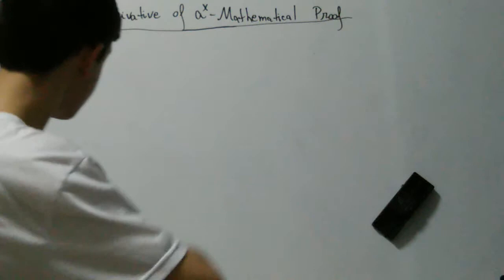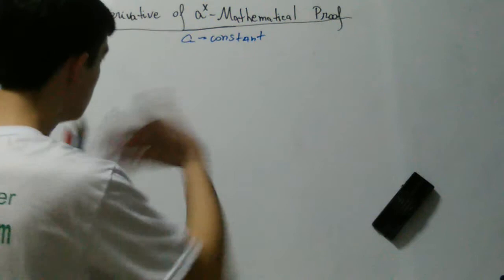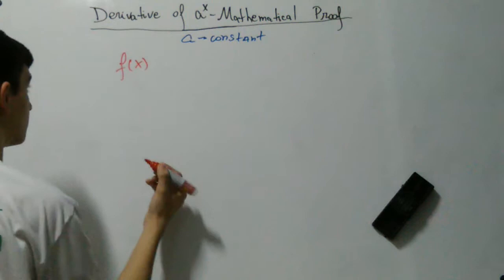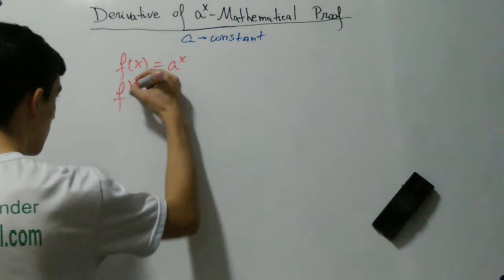Here, a is just a constant — it's a number, but we're representing it generically as a. We're going to take the derivative of a to the x with respect to x. So we have the function f of x equals a to the x, where a is just a constant. And we want to know the derivative of this function, which is f prime of x.